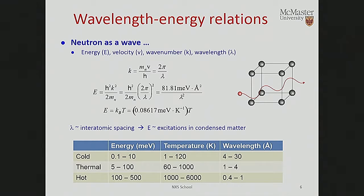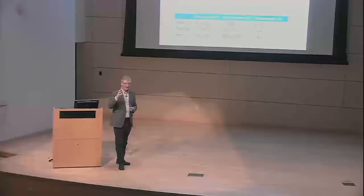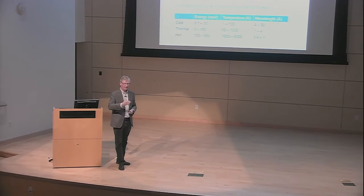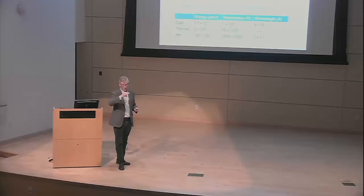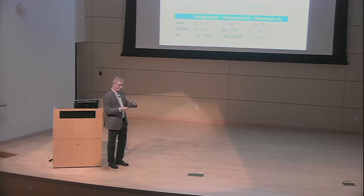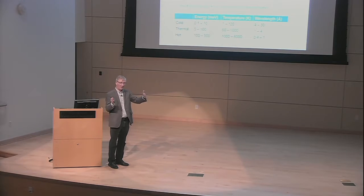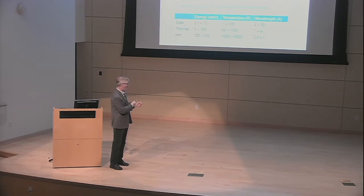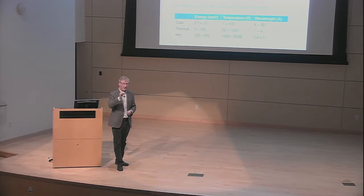For inelastic scattering, both the wavelength and the energy are important. The energy matters because for inelastic scattering you're interested in the energy spectrum of the elementary excitation. For phonons — lattice vibrations — these usually range from zero energy up to about 100 meV; not many systems have phonons much higher than that. Magnetic excitations might go up to 200 or 300 meV. For inelastic scattering, the wavelength is also important because what we're trying to understand is how the neutron transfers a certain amount of energy and momentum to the sample, thereby creating the excitation.